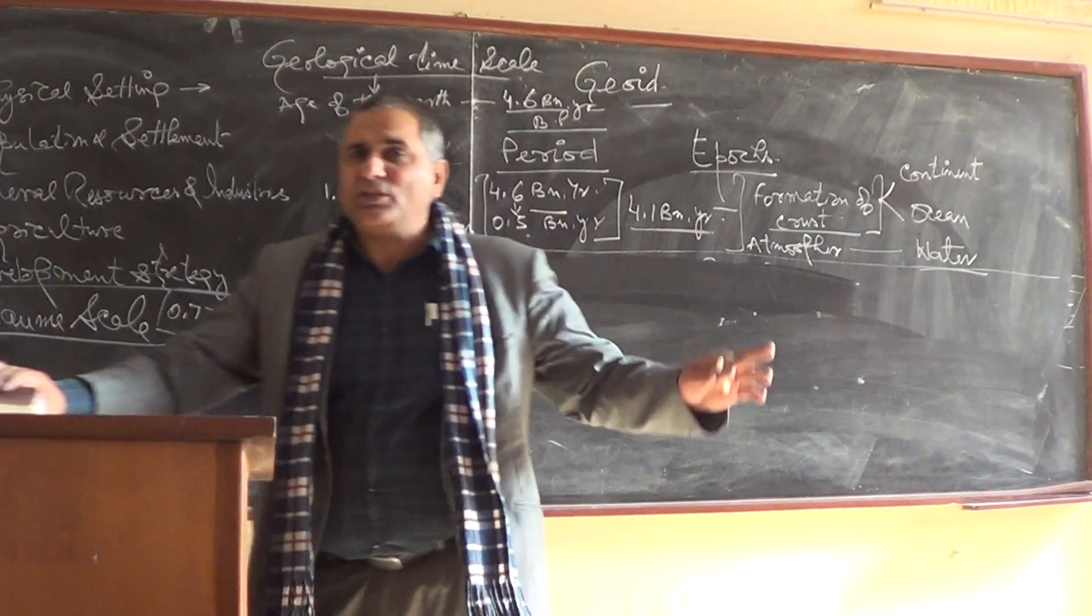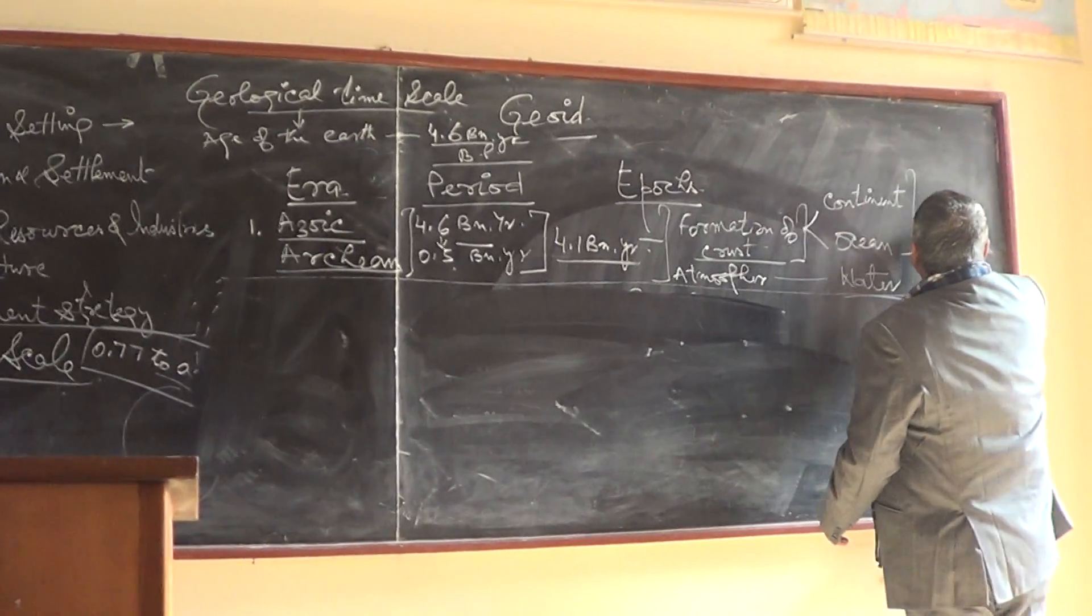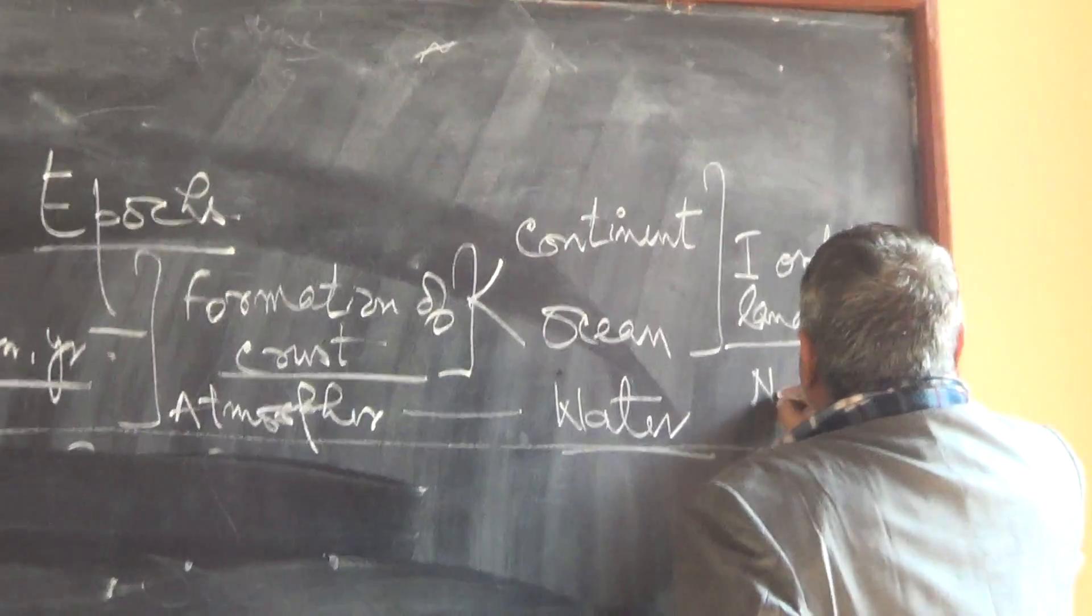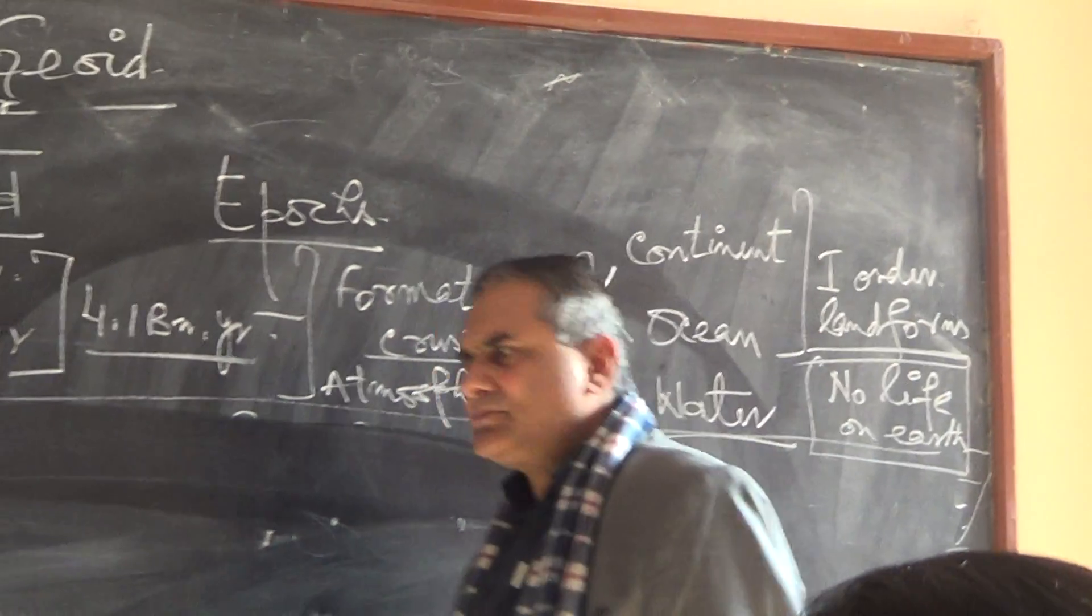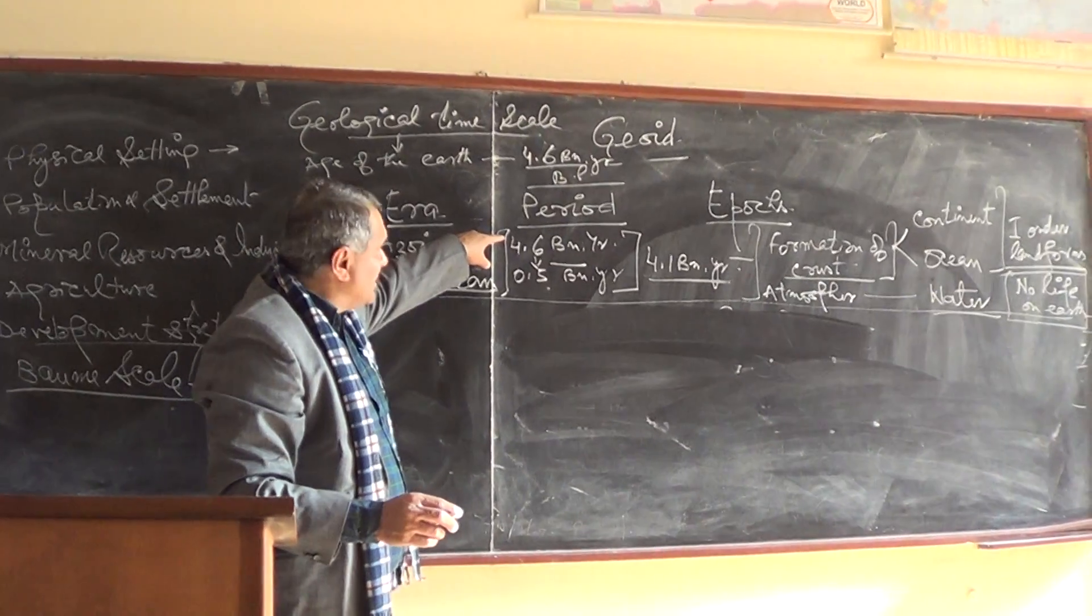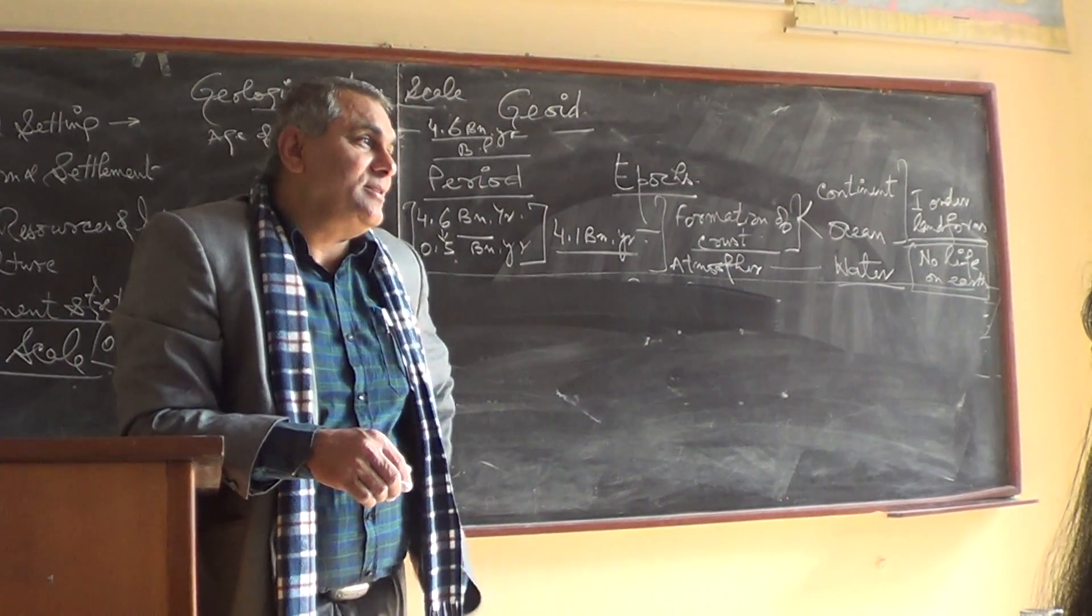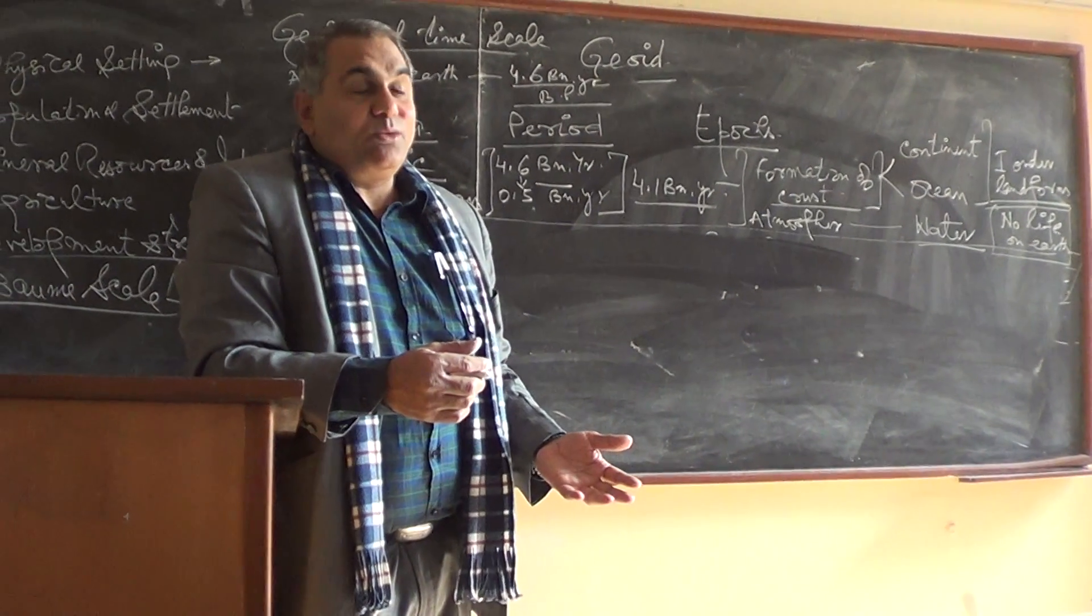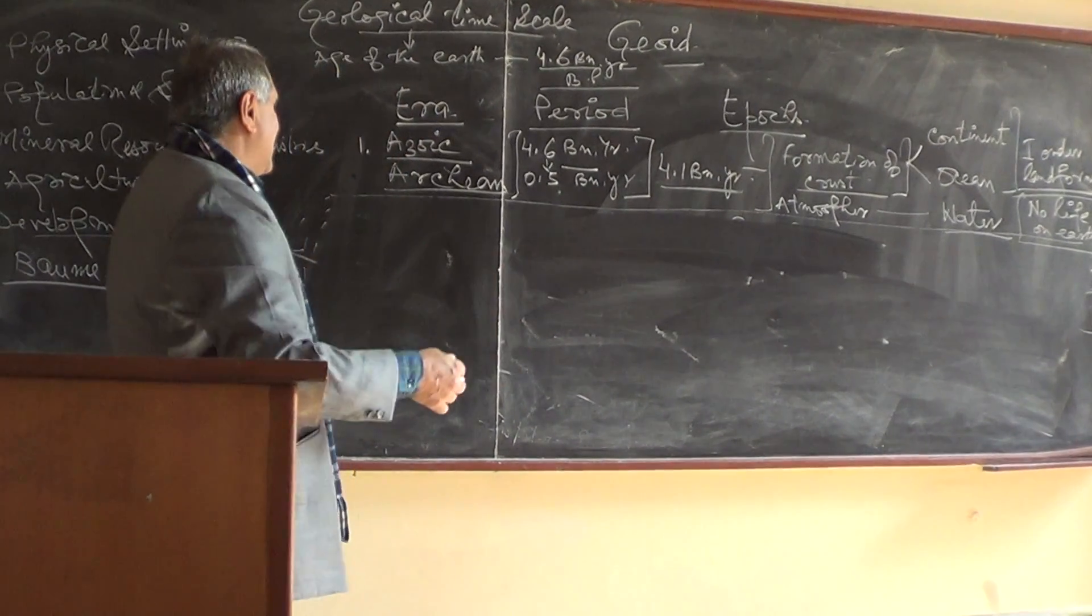The first order land formation formed during the Archean period. There was no life on earth in any form. Now in up to this time period, it started BP, before present, 4.6 billion. If I say the age of the earth is 24 hours, then the age of the man is 2 seconds. Man appeared on earth just 2 seconds before. So man is the last creature on the earth, and which has disturbed the entire pristine entity of the earth.